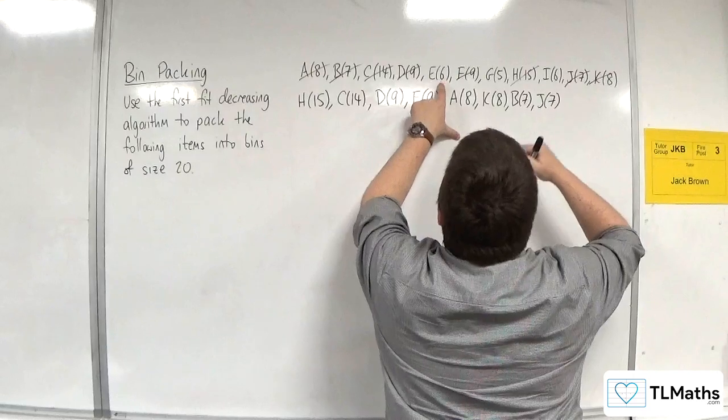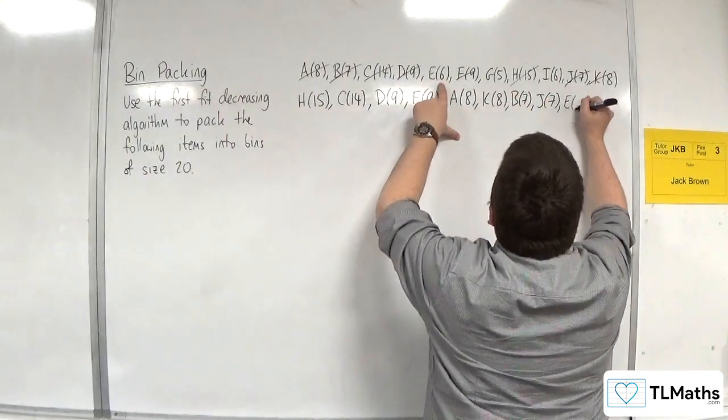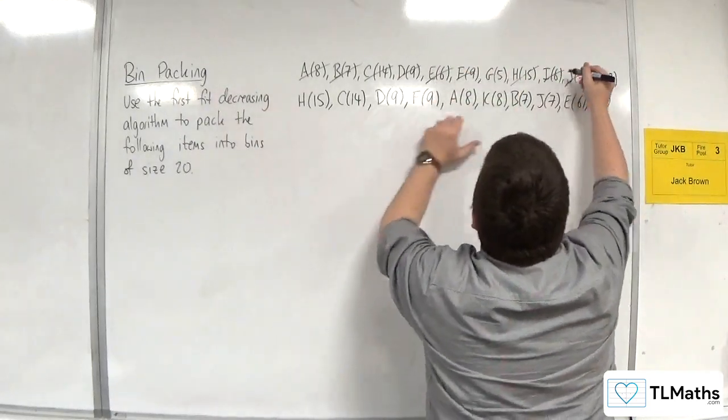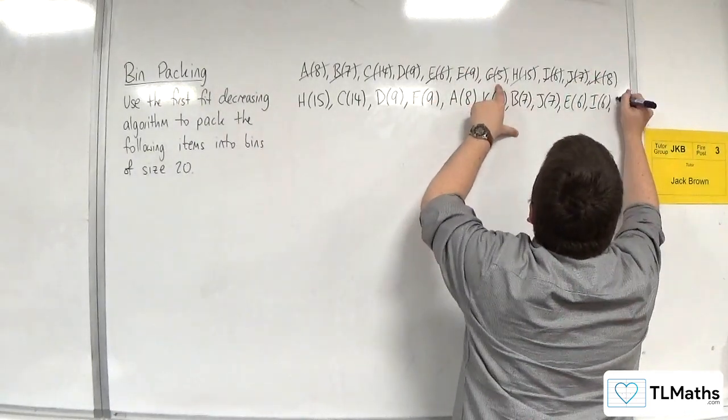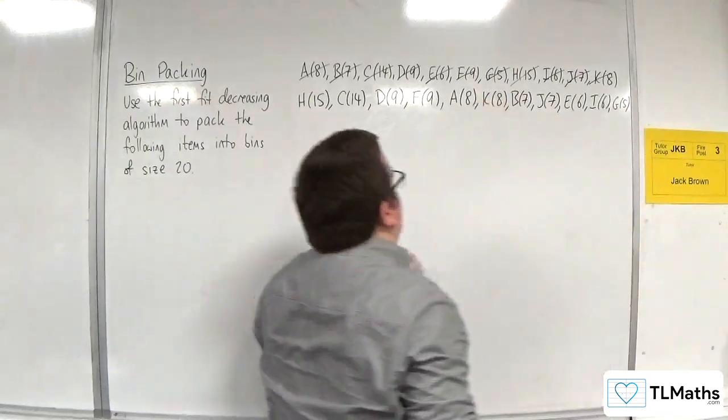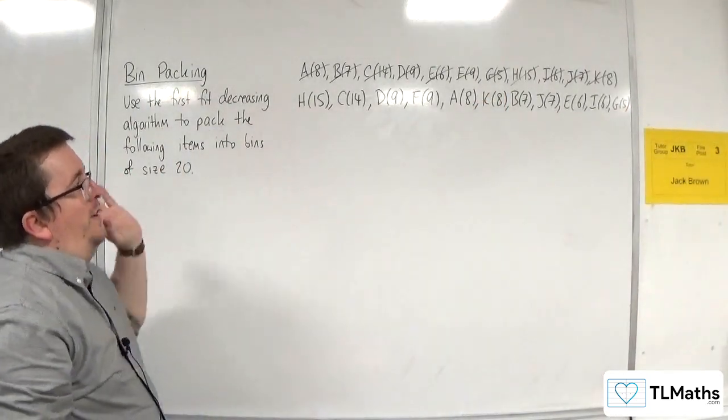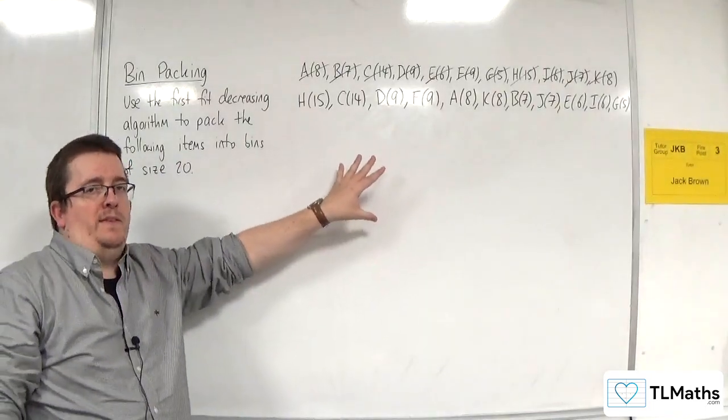And then we've got the E, 6 and the I, 6. And last but not least, we've got the G, 5. Okay, so now they're in decreasing order. Right. That is really to help me out and make this easier for myself.